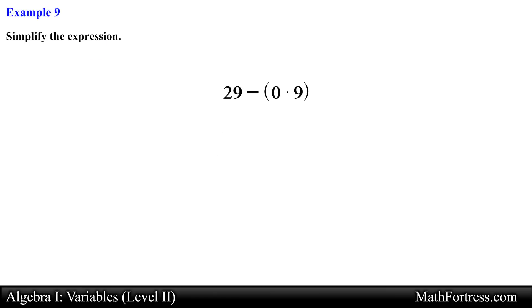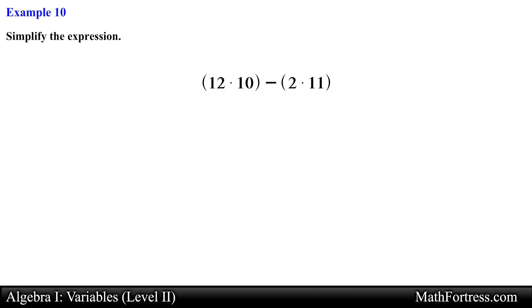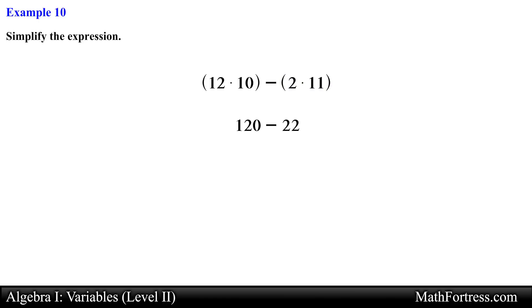Try the next one: 29 minus the quantity (0 times 9). Zero times anything is always equal to 0, so this simplifies to 29 minus 0, which is equal to 29. Next, simplify the quantity (12 times 10) minus (2 times 11). Here we have an expression with two parentheses. The left-hand side reduces to 120 and the right-hand side reduces to 22, so 120 minus 22 simplifies to 98.